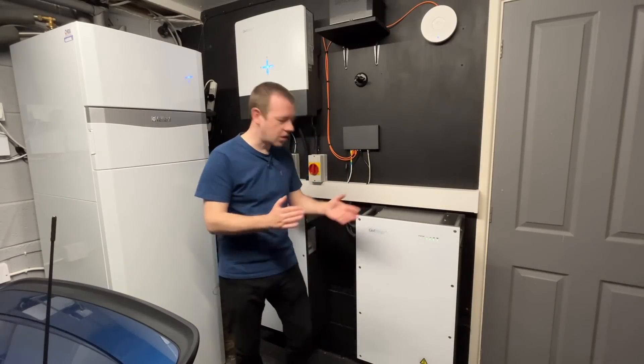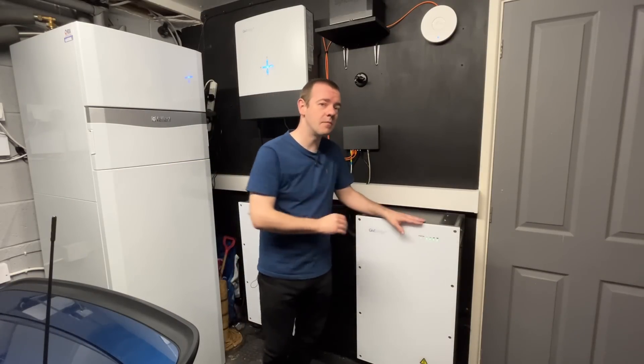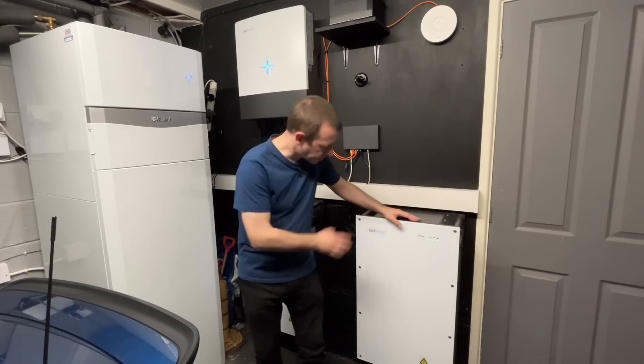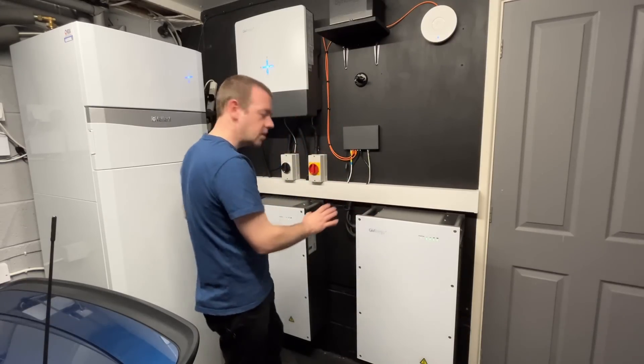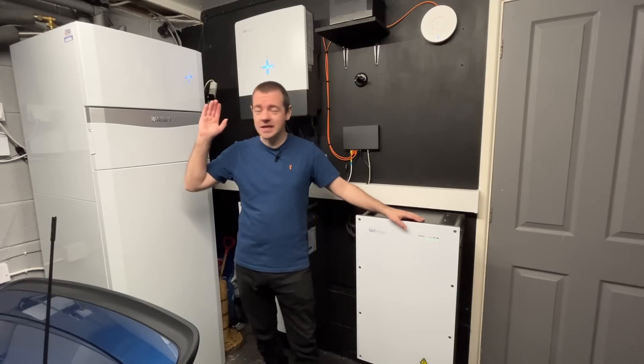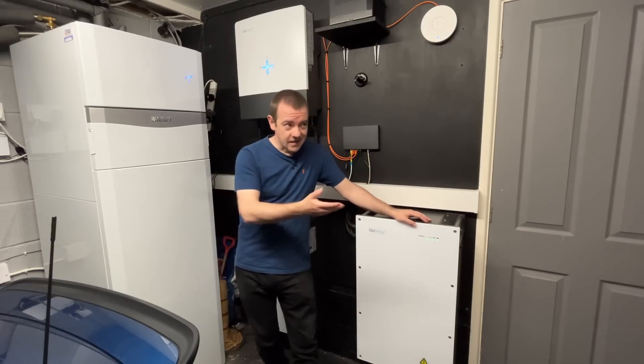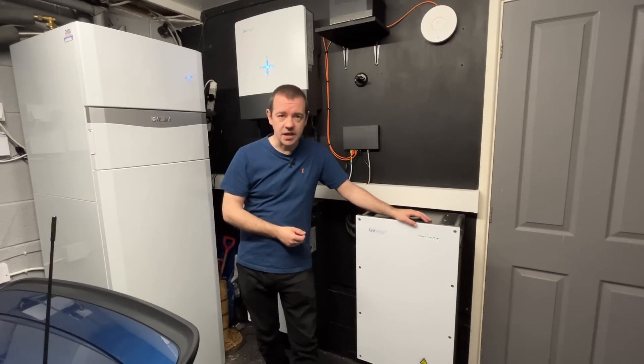Only if it's about minus 10 or colder do we end up dipping into the peak rate for maybe one to three weeks of the year. So they're perfectly sized for our usage pattern. And of course, at times like this, when there's a good amount of solar, I barely touch the grid if you exclude the EV charging anyway.